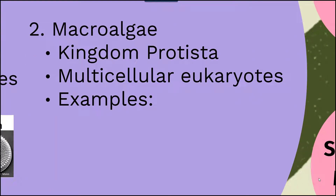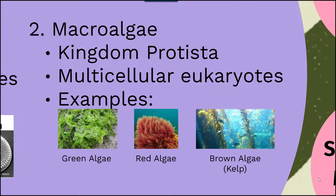Next we have a category of macroalgae. This again consists of organisms that belong to the kingdom Protista; however, these are going to be multicellular eukaryotic organisms, as you can see in these images of green algae, red algae, and brown algae. These organisms — particularly the red algae and the green algae — can have some single-celled organisms, but by and large they consist of multicellular organisms.